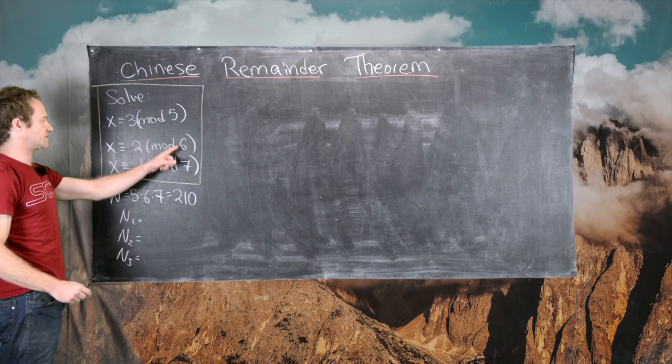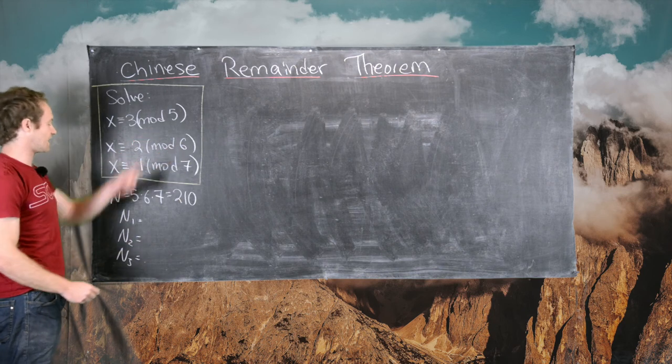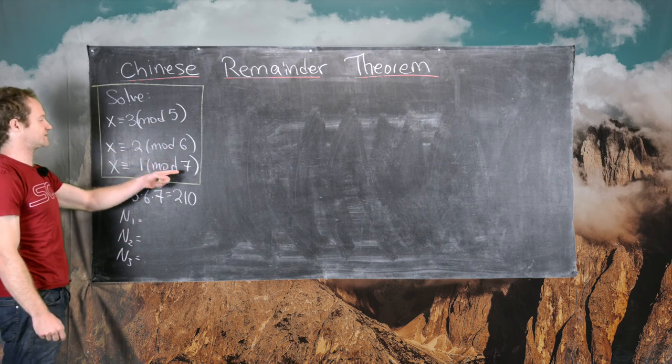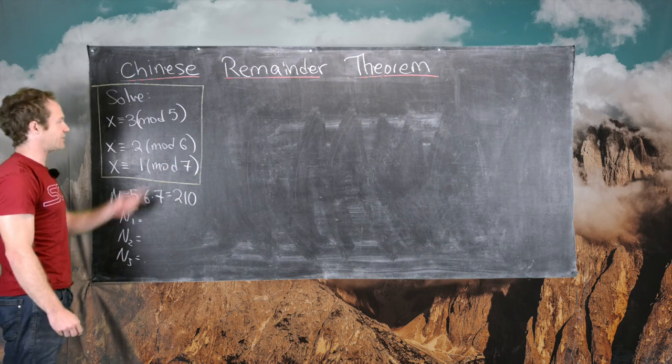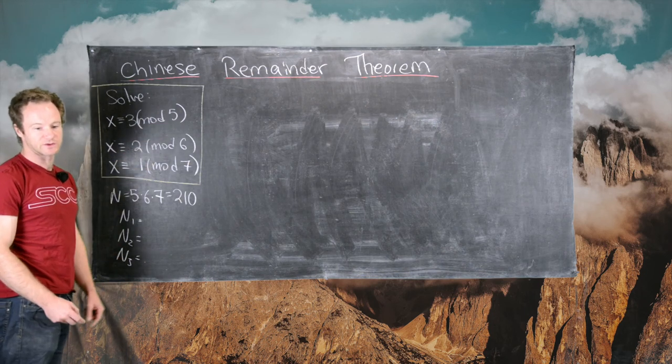Capital N2 is the product of the first and the third leaving out the second, and capital N3 is the product of the first two, so we're leaving out the third.